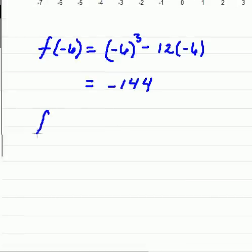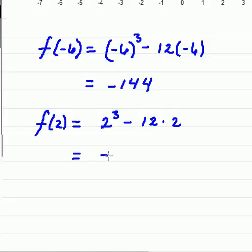And we need to try the other side, f(2). And so that means you're going to go 2³ - 12(2). And working through that, you should get -16.